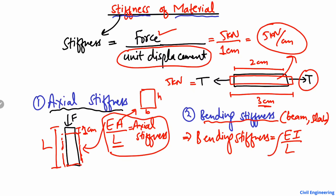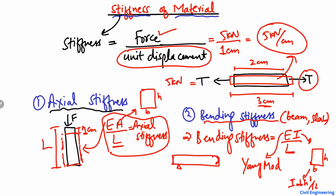In the formula EI/L: E is the Young's modulus (modulus of elasticity) of the material, I is the moment of inertia of the cross-section. For a rectangular beam with width b and height h, the moment of inertia is bh³ divided by 12. L is the length of the beam. In this way we can find the bending stiffness for a flexural member.